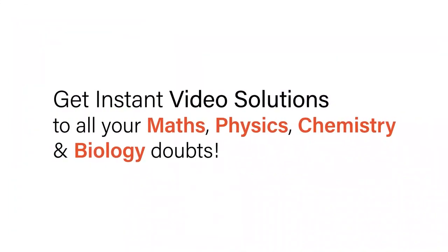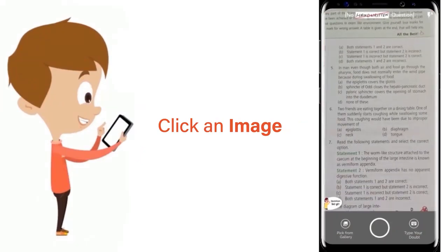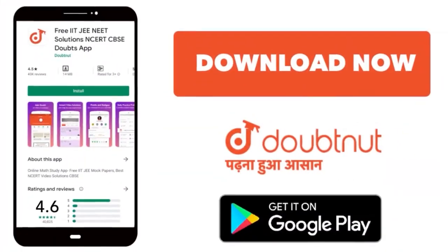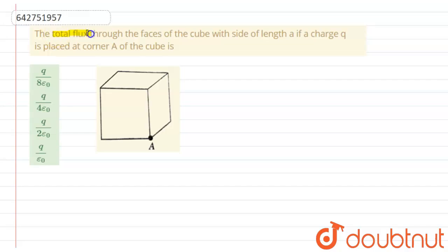With Doubtnet, get instant video solutions to all your math, physics, chemistry, and biology doubts. Just click the image of the question, crop it, and get an instant video solution. The problem: Find the total flux through the faces of a cube with side length a if a charge q is placed at corner A of the cube.